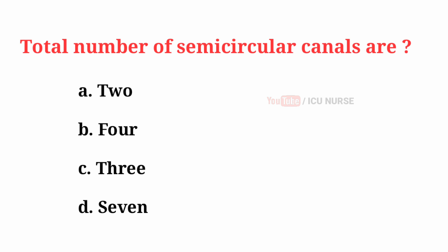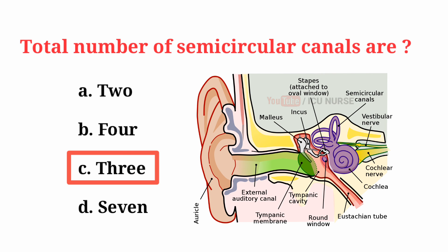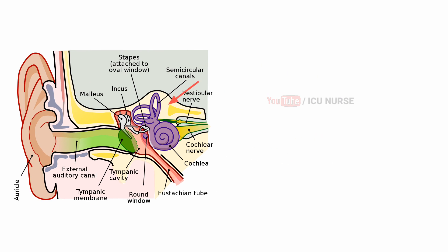Total number of semicircular canals are? The correct answer is C: 3. Semicircular canals are three tiny fluid-filled tubes in your inner ear that help you keep your balance.